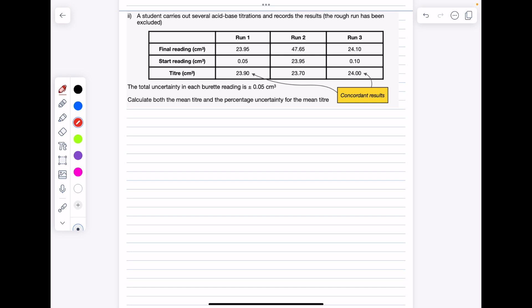Let's take a slightly trickier example. A student carries out several acid-base titrations and records the results. The rough run has been excluded. The total uncertainty in each burette reading is plus or minus 0.05 centimeters cubed. Calculate both the mean titer and the percentage uncertainty for the mean titer. So our first step is to identify the concordant results. That depends on your exam board, but we've identified run one and run three. So we're going to find our mean titer first of all by finding the average of these two values to get 23.95.